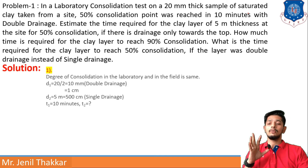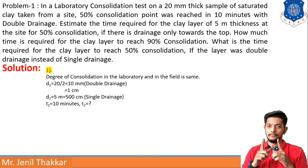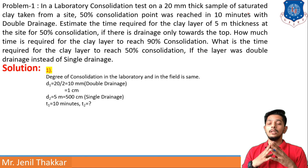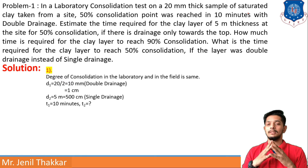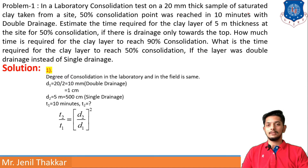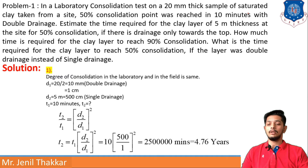First, note that the degree of consolidation in the laboratory and in the field is always the same. For the lab sample with double drainage, D1 = 20/2 = 10 mm = 1 cm. For the field with single drainage, D2 = 5 m = 500 cm. Using T2/T1 = (D2/D1)², with T1 = 10 minutes, the value of T2 comes out as 4.76 years.